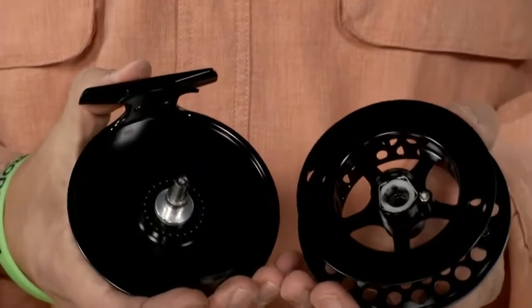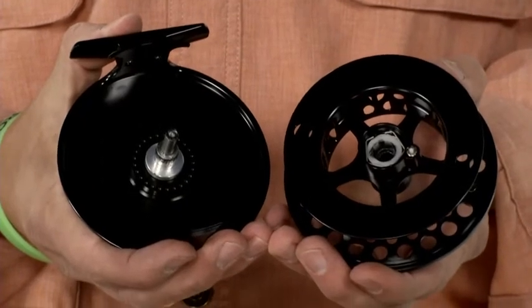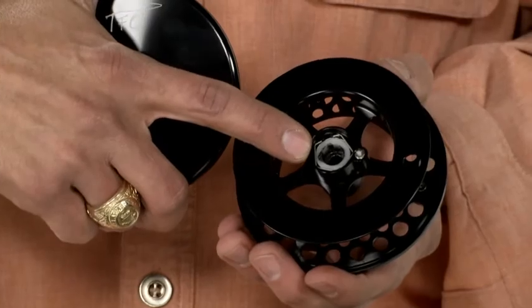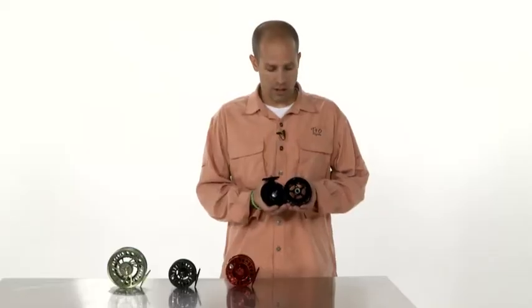By depressing the lever on the front of the spool you can remove the spool and underneath you'll notice a wire hex spring and a one-way clutch bearing similar to changing our BVK reel from left hand to right hand retrieve.